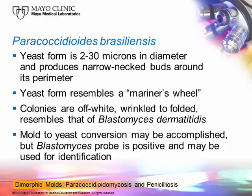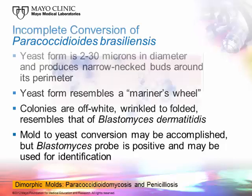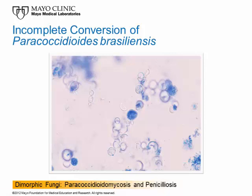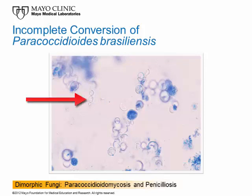The Blastomyces probe cross-reacts with a couple of other things as well, so some feel the probe is not specific enough, but in our experience it has been useful. This is an incomplete conversion of Paracoccidioides brasiliensis — if you look carefully, you can see yeast cells, one in the center that is kind of cup-shaped and collapsed. They're really nondescript — one at about ten o'clock is in chains. So there's really not a lot there to tell you that this is anything in particular.